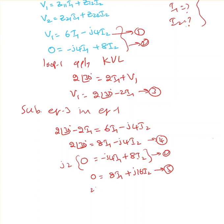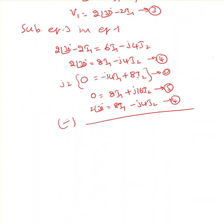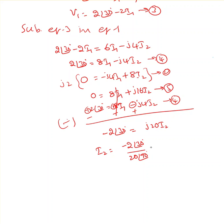Now I subtract equation 5 from equation 4. The 8·I1 terms cancel. The right-hand side becomes minus j4·I2 minus j16·I2 equals minus j20·I2. So: minus 2∠30° equals minus j20·I2, which means I2 equals minus 2∠30° divided by 20∠90°, giving 1/10 at an angle of 30 minus 90 degrees.